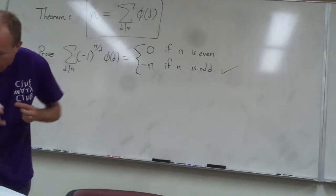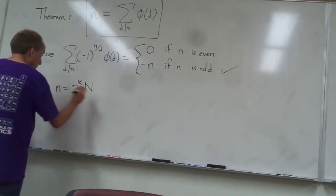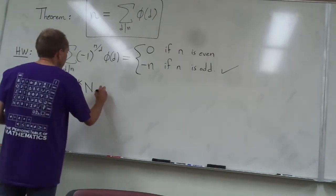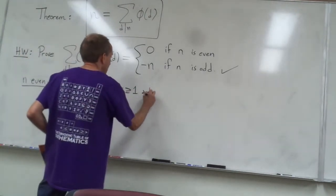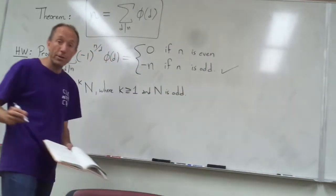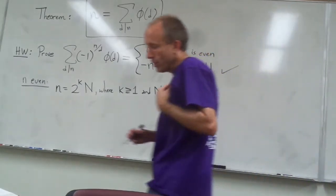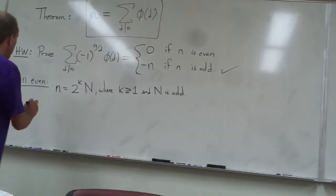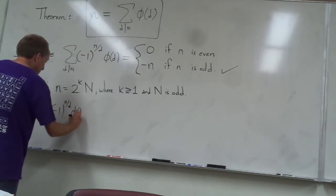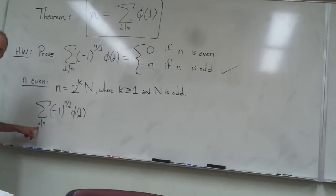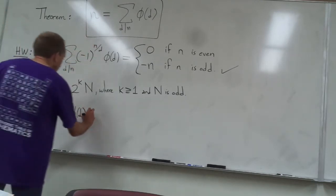There's a hint in the book for this case. Write n as 2 to the k times capital N, where k is at least one and capital N is odd. We take out all the factors of two — there has to be at least one because n is even. The book suggests this, and then makes the point that the summation you're trying to calculate — adding up negative one to the n over d times phi of d over all divisors of n — can actually be broken into two parts.